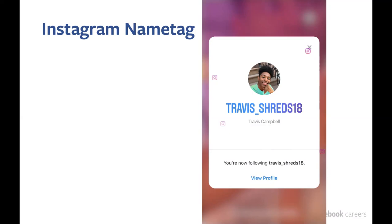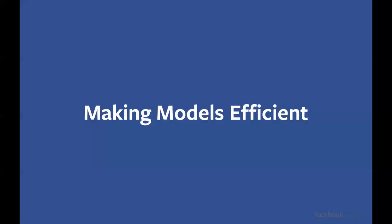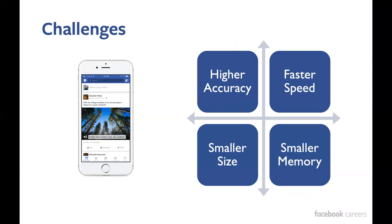A lot of these actually run on the mobile device. So how do we make models that are efficient? There are a lot of challenges. To be able to run on the device, you need to tackle several different things: sometimes you need high accuracy, especially for AR effects, because if it's not accurate you'll see jaggedness. You definitely want faster speed to run in real time. But for mobile devices, the RAM is much smaller than compared to GPU devices, so you also want the memory footprint to be small.